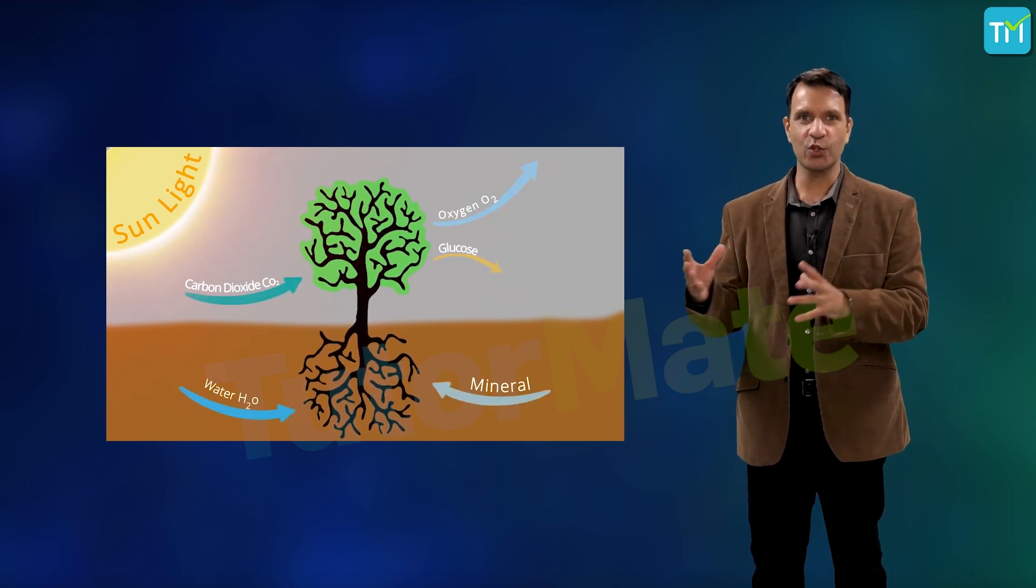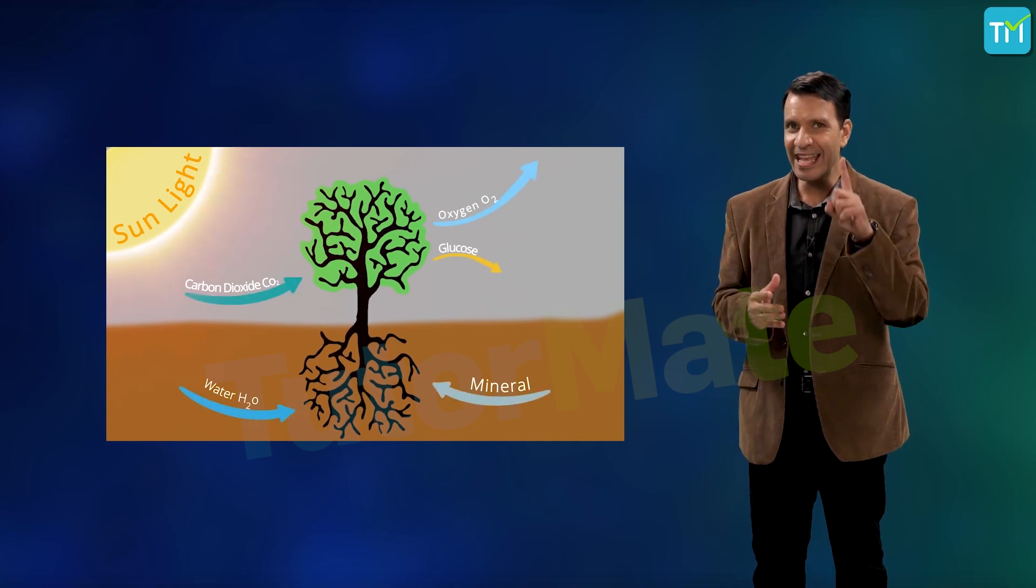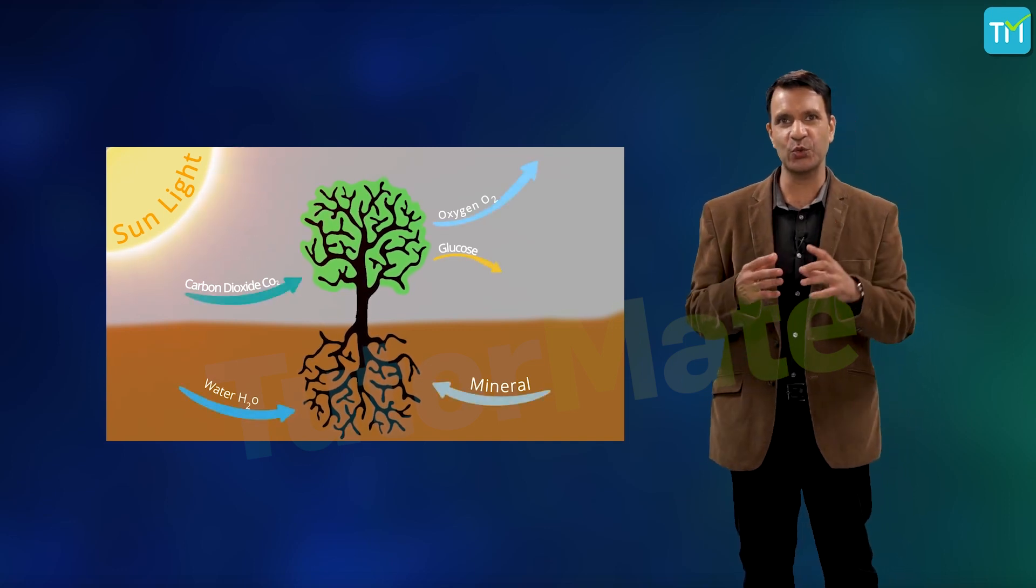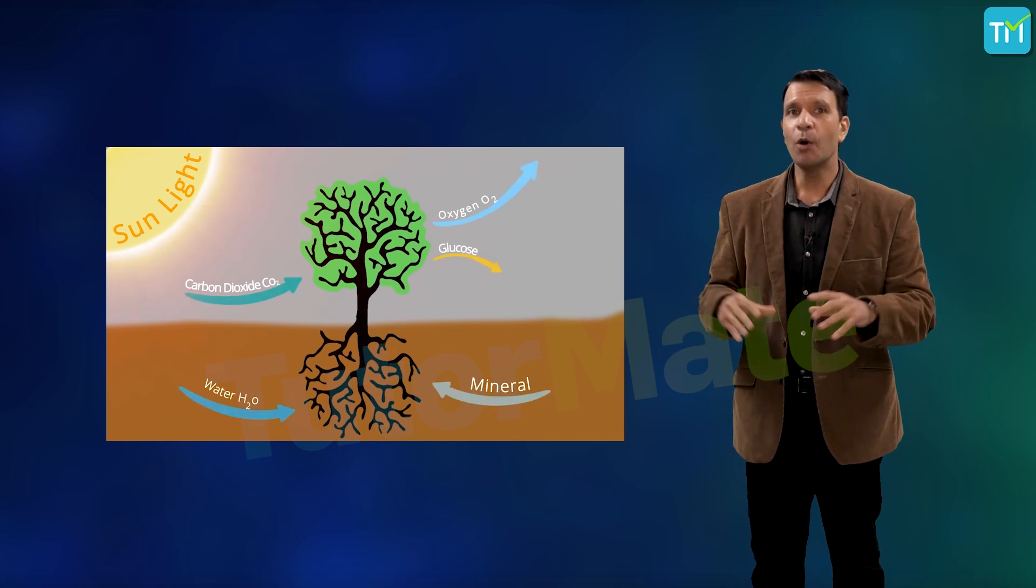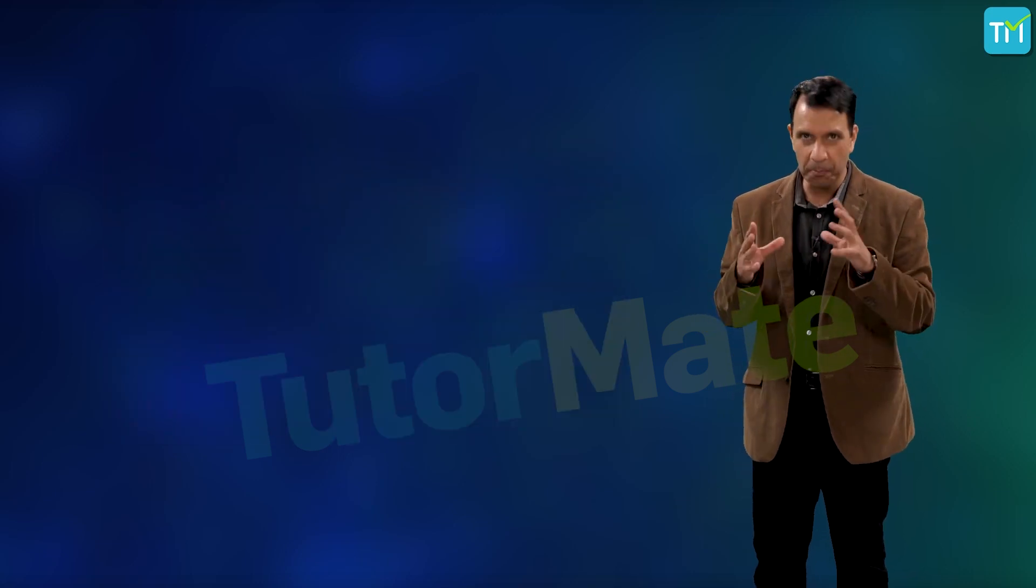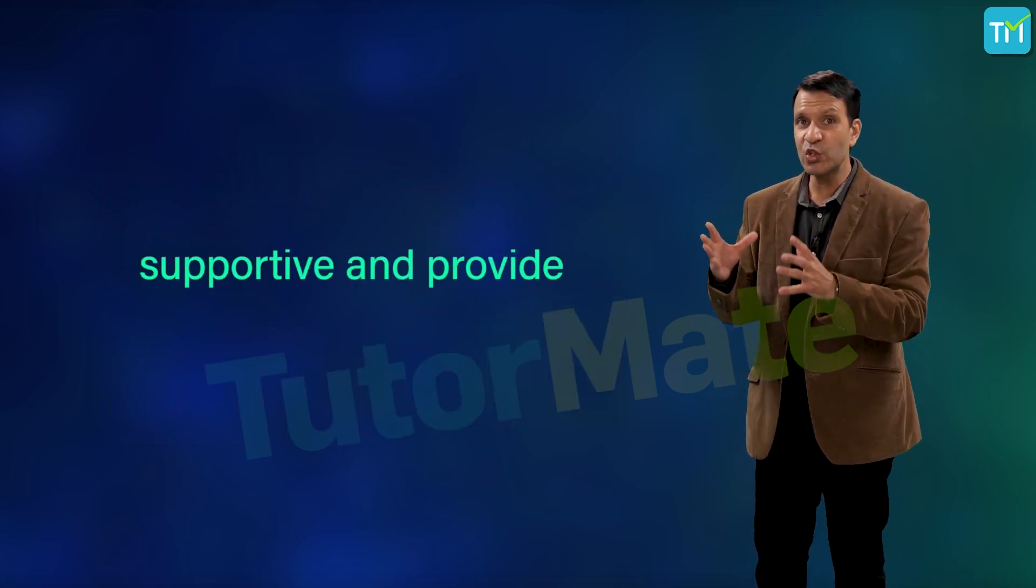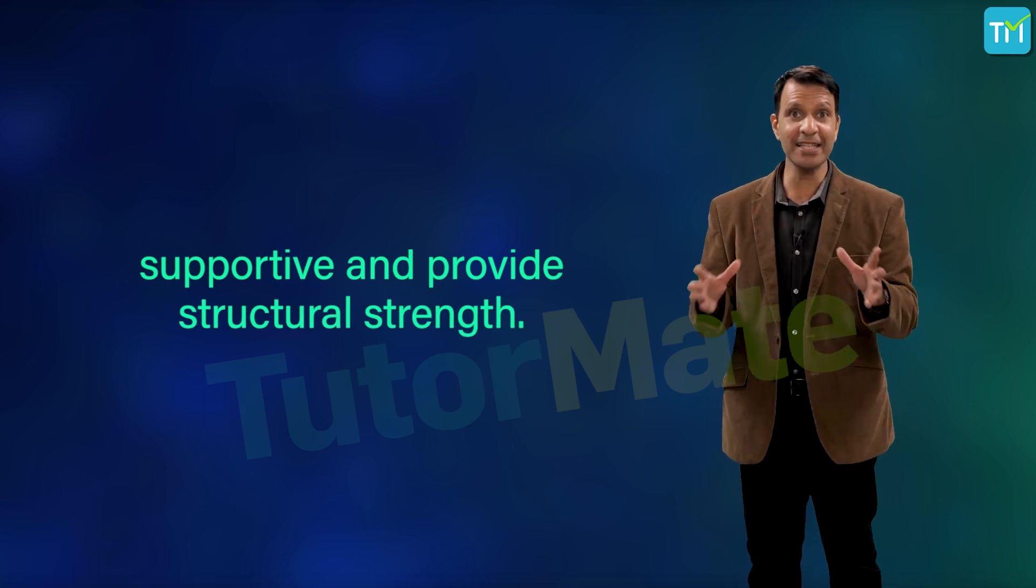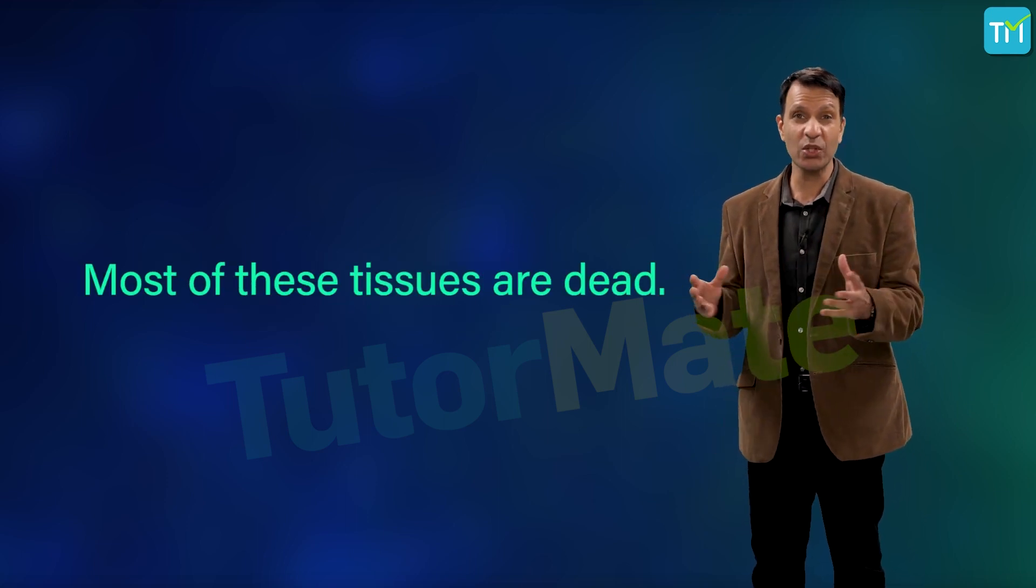Therefore, plants require less energy to sustain. As a result, most of the tissues in plants are supportive and provide them with structural strength. Surprisingly, most of these tissues are dead, but just like living cells, dead cells can also provide mechanical strength easily and need less maintenance.